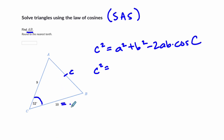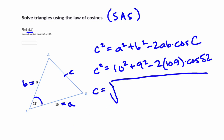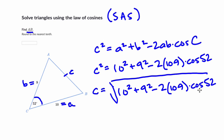Little side A is across from angle A, and little side B is across from angle B. So we compute: 10 squared plus 9 squared minus 2 times 10 times 9 times the cosine of 52. To solve for C, we take the square root of all this. I like to use the calculator here and plug it all in at once.